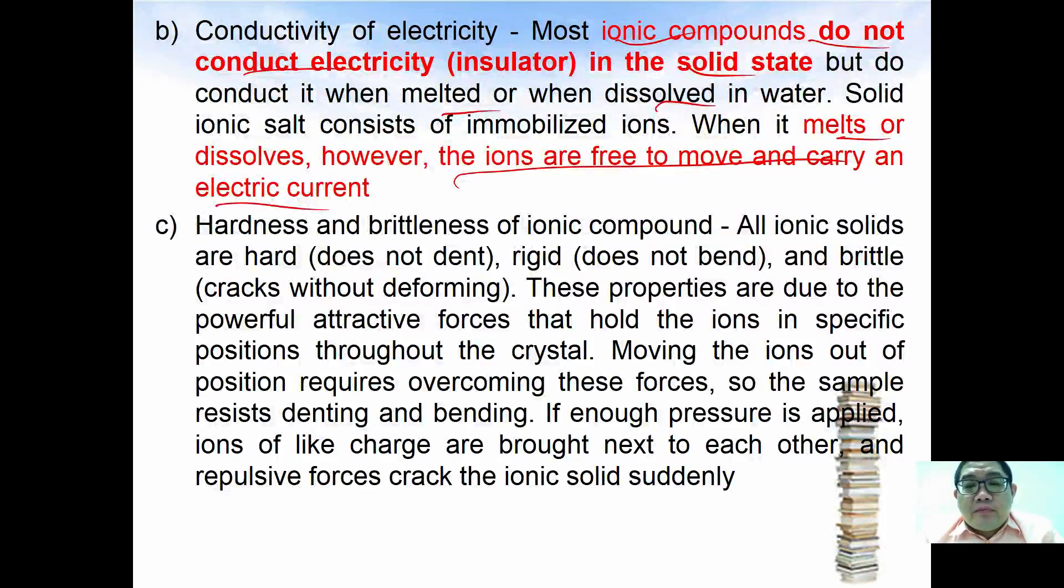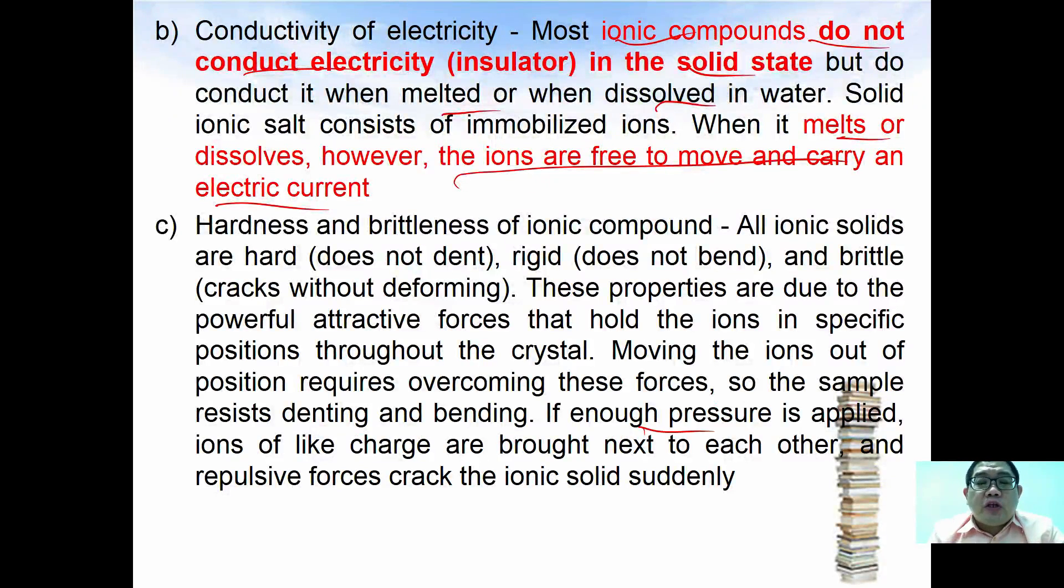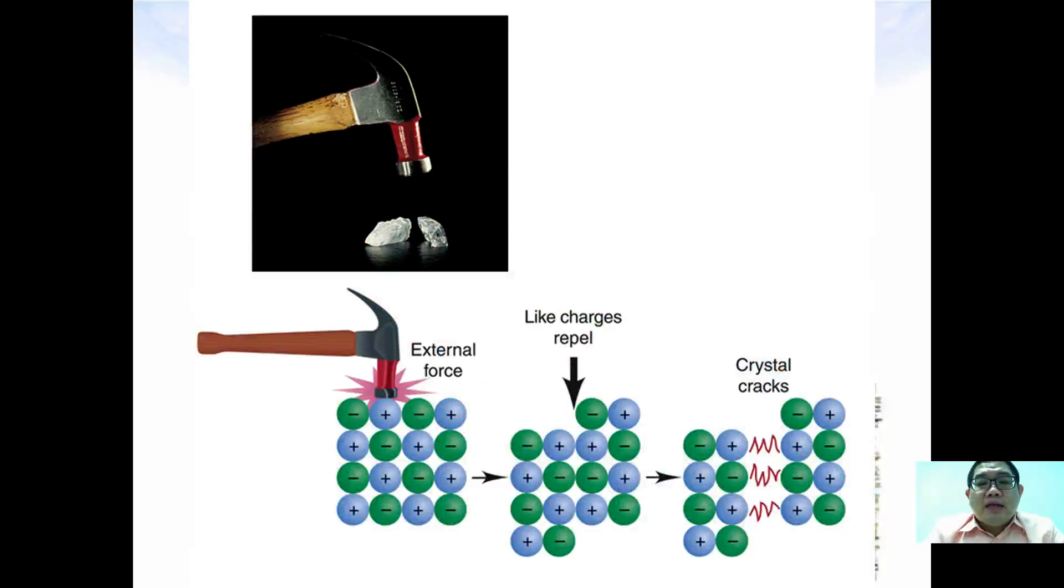As for the hardness and brittleness of ionic compounds, all ionic solids are hard, rigid and brittle. These properties are due to the powerful attractive forces that hold between the ions through the crystal. Moving the ions out of the sample requires repositioning of these forces, so the sample will resist denting and bending. When enough pressure is applied, you can see that when you have external forces knocking on it, the charges are likely to repel hence crack. That is why most of the ionic compounds, even though they are hard, they are brittle due to these forces. This will be the first part of our video lessons. I'll continue on the next one later. Thank you.